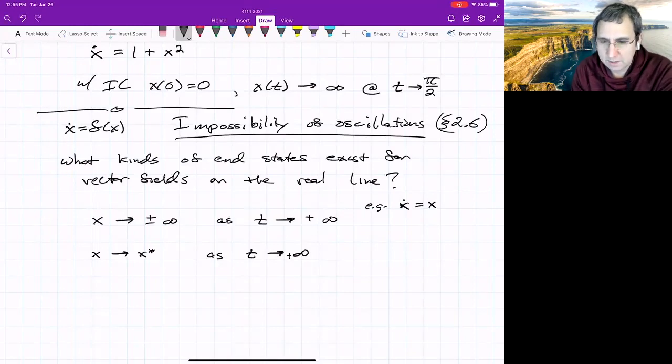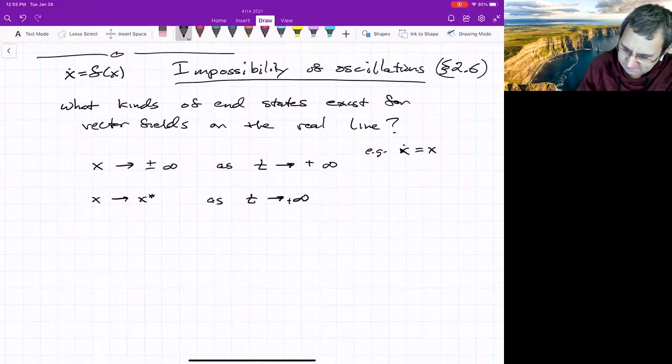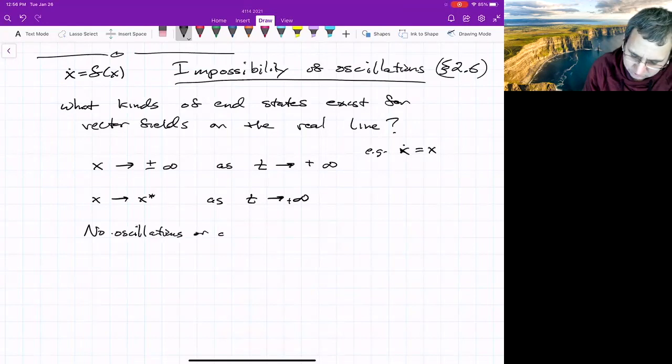And that's it. And how can we understand this? Well, I guess there's another thing to point out. So we either go to infinity or we go to a fixed point. There's no oscillations or cycles.